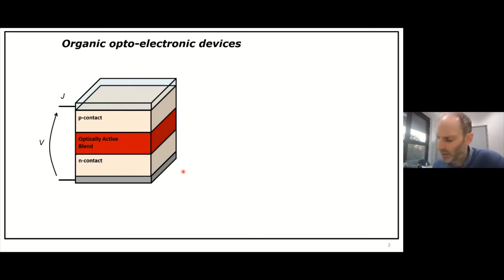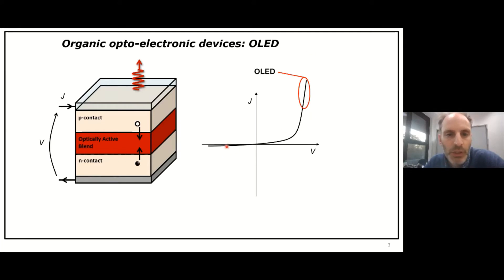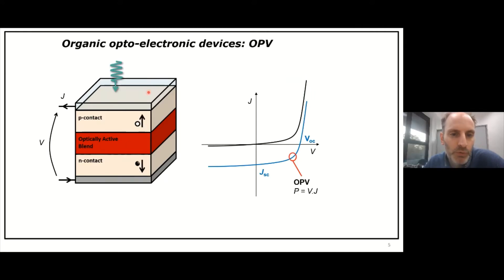A brief introduction: photodetectors, solar cells, and even LEDs are very similar devices. Conceptually, they have a transparent electrode and then usually the active layer — which you want to emit or absorb light — is sandwiched between a selective contact for holes and a selective contact for electrons. If you apply a voltage, current will flow, and if you do this in the dark, the IV curve will look typically like this.